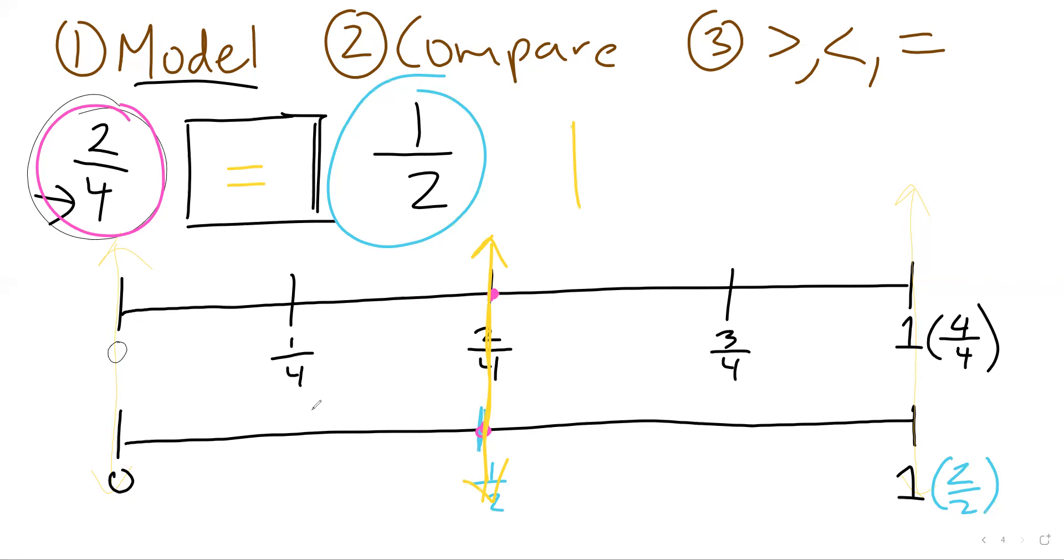And we can double check that real quick with a model. So I'm going to do two models side by side. One of them is two fourths. So that's this one. One, two. The other one is half. And you can see, look at that. Yeah. Same place. So these ones are actually equal. But again, you could do that with a model. You could do that with a number line. So think about this process. Give it a go. Practice it out.